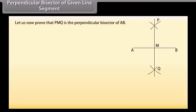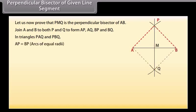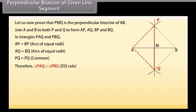Let us now prove that PMQ is the perpendicular bisector of AB. Join A and B to both P and Q to form AP, AQ, BP, and BQ. Now in triangles PAQ and PBQ: AP is equal to BP, because these are arcs of equal radii; AQ is equal to BQ, because these are also arcs of equal radii; PQ is equal to PQ, common. Therefore, by SSS congruence rule, triangle PAQ is congruent to triangle PBQ. So angle APM is equal to angle BPM by CPCT.